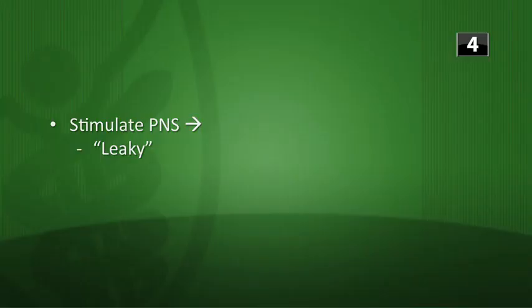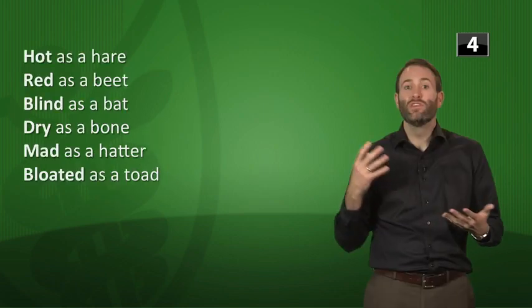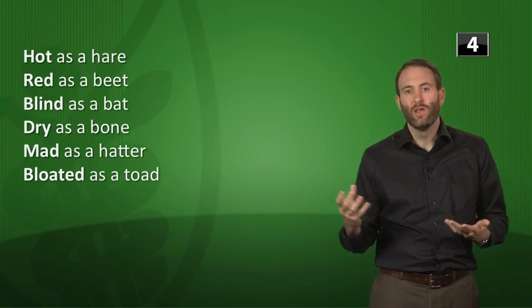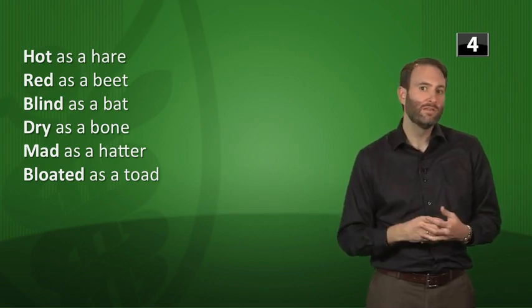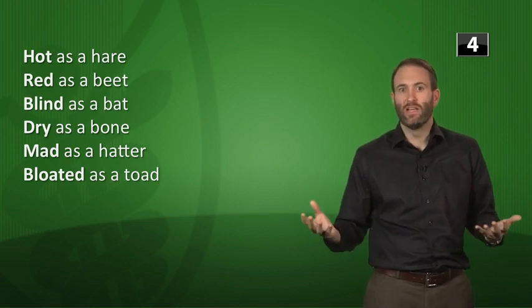Stimulating the parasympathetic nervous system caused everything to become leaky — recall Old McDonald who started to drool because of organophosphate poisoning. Well, if we inhibit the parasympathetic nervous system, then we dry everything up. The mnemonic to remember: hot as a hare, red as a beet, blind as a bat, dry as a bone, mad as a hatter, and bloated as a toad.